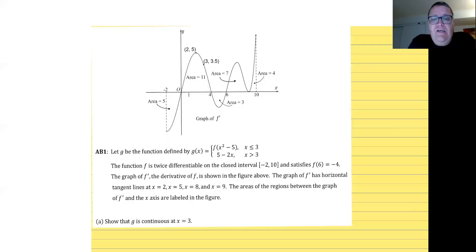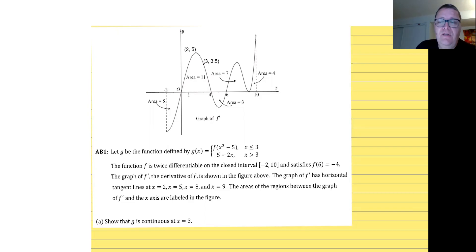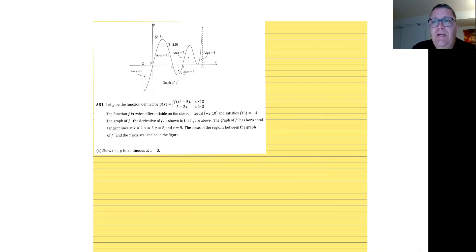Let's start with part A. Part A is about continuity — show that g is continuous at x equals 3. Remember that continuity requires three things: the limit from the left needs to equal the limit from the right, and both need to equal the value of the function at that point. If all three happen, the function is continuous.